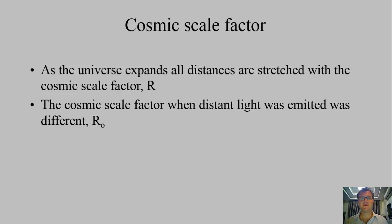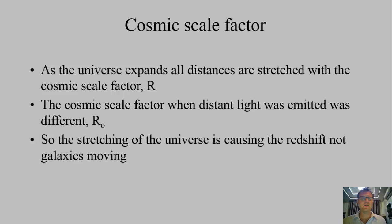Now the cosmic scale factor, when a distance light was emitted, is different to the cosmic scale factor which we have now. So we have something which is known as R_O. R_O is the cosmic scale factor when light was emitted, and R is the cosmic scale factor which we're experiencing at this moment in time. So this argument means that the stretching of the universe is causing the redshifting, and not the galaxies moving themselves.